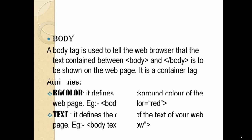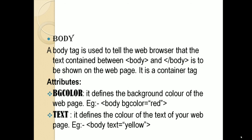Let's check what are the two types of attributes supported by body. The first one is called bg color, which stands for background color. This attribute allows you to define a color for the background of our web page — for example, body bgColor="red". The value of the color should be given in double quotes. The second attribute is called text, which allows you to define a color for the text of our web page, also given in double quotes. So there are two attributes supported by the body tag: bg color and text.